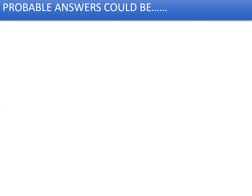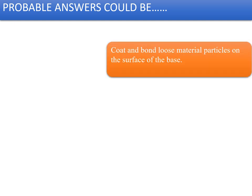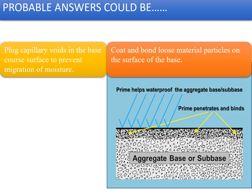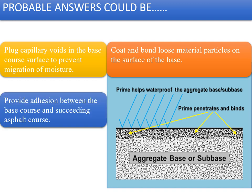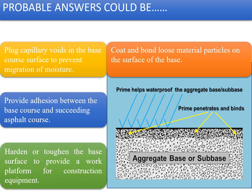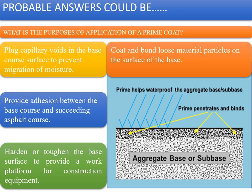The purpose of a prime coat is to coat and bond the loose material particles on the surface of the base course, which can be wet mix macadam or WBM. It plugs capillary voids in the base course surface to prevent migration of moisture. It provides adhesion between the base course and succeeding asphalt courses, and it hardens or toughens the base surface to provide a work platform for construction equipment. It also waterproofs the aggregate between the base and sub-base and penetrates into the non-bituminous layer to create a bond between particles.